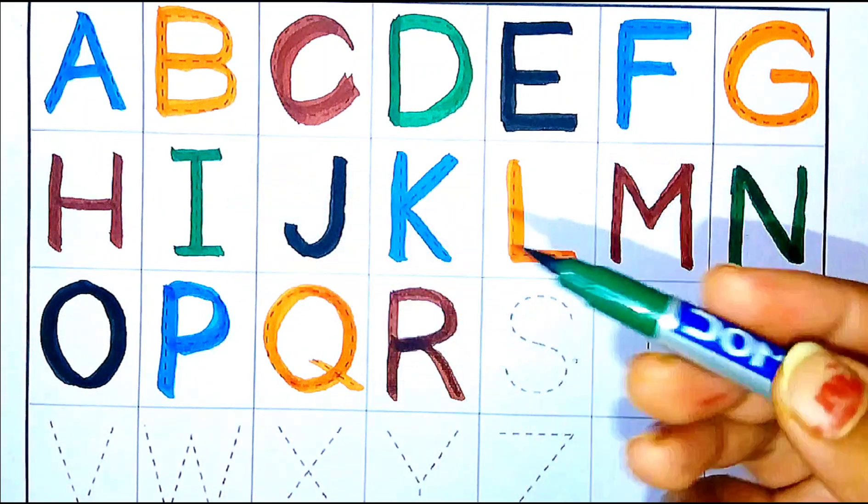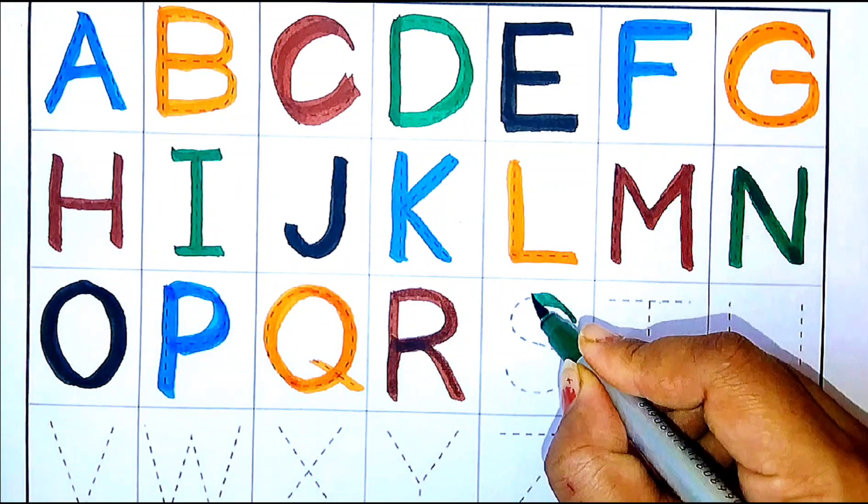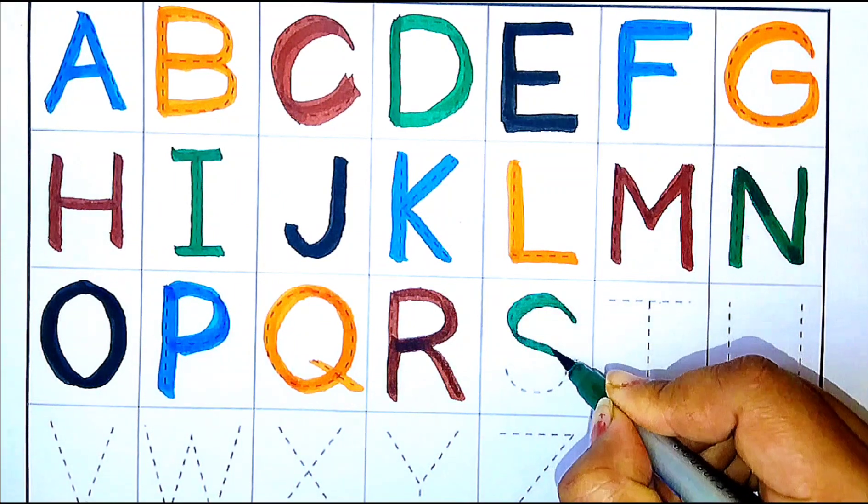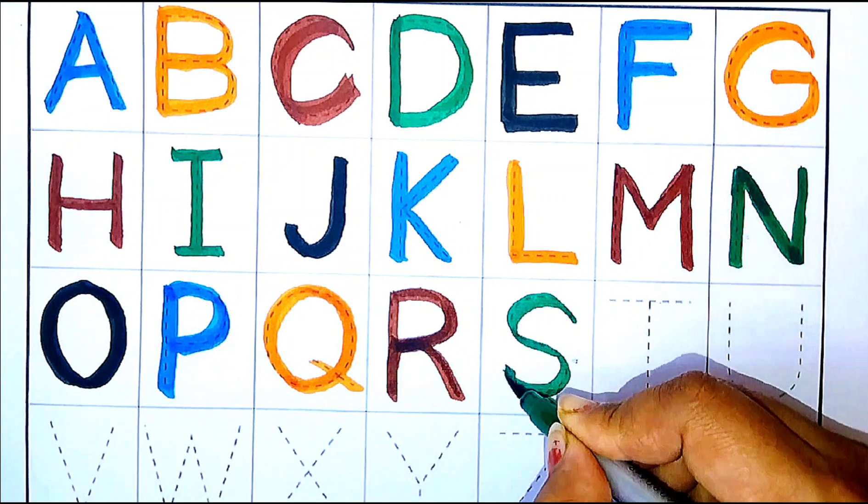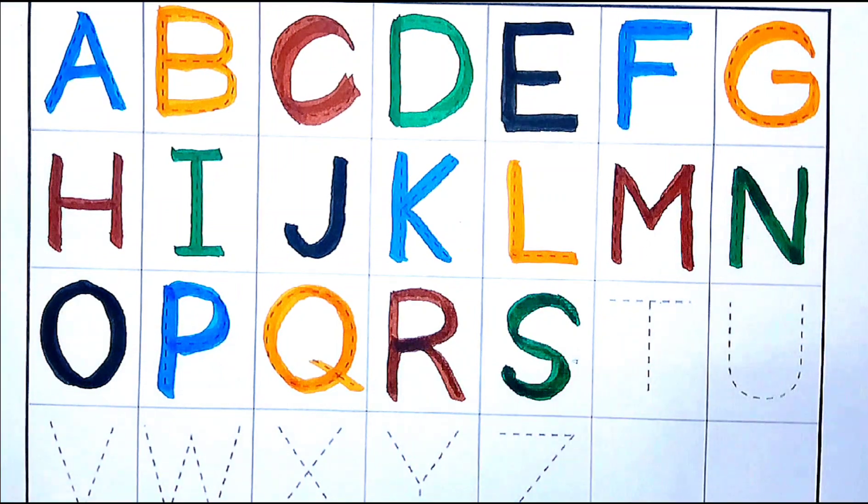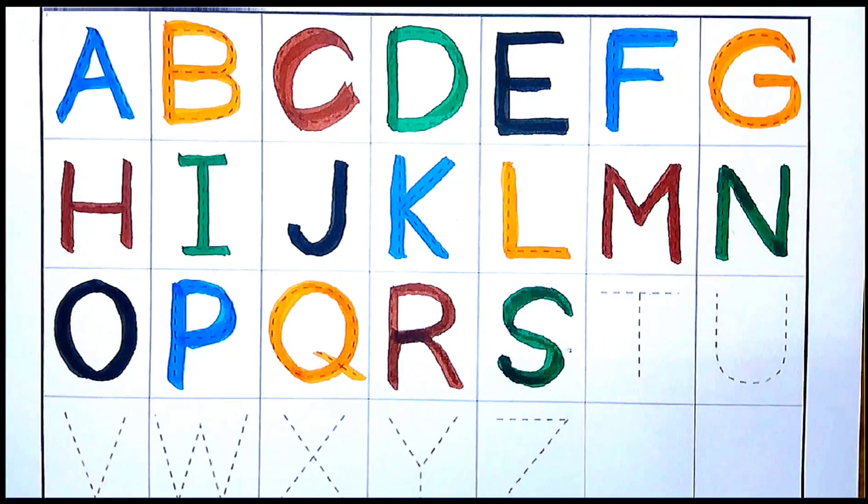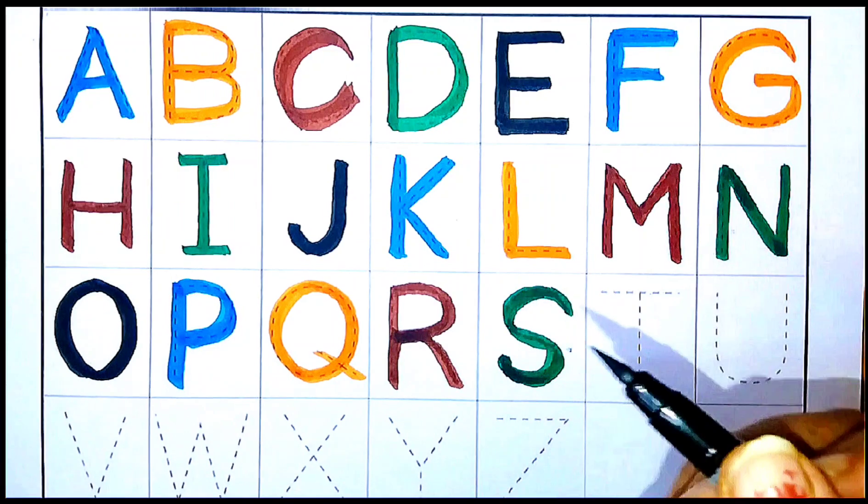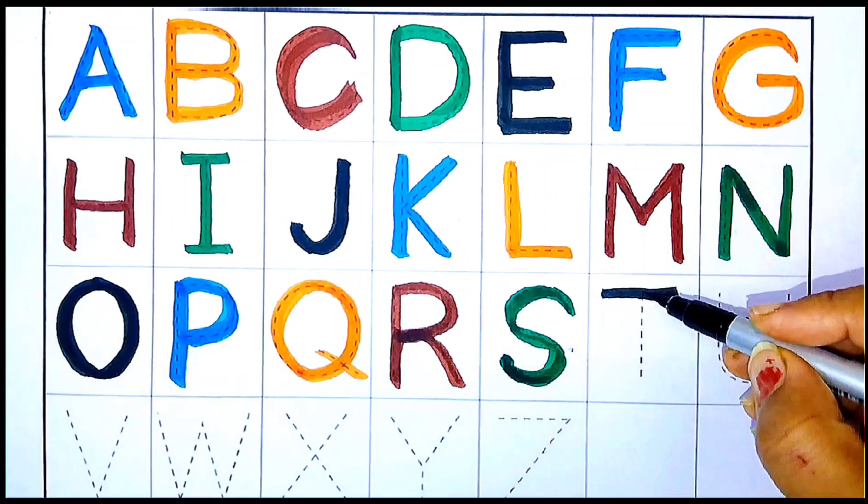Green color. S is for snake. Green color. S is for snake. T, T for tiger.